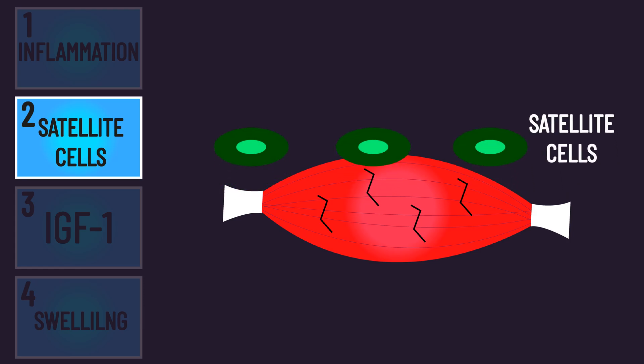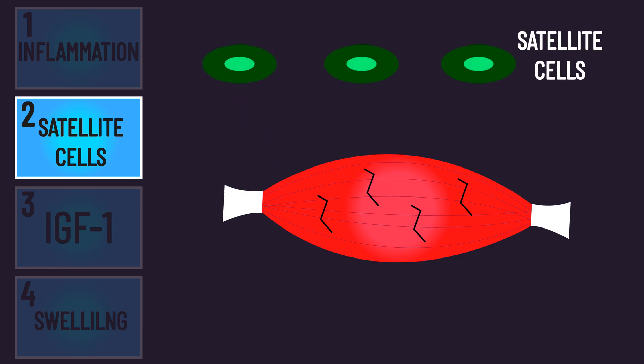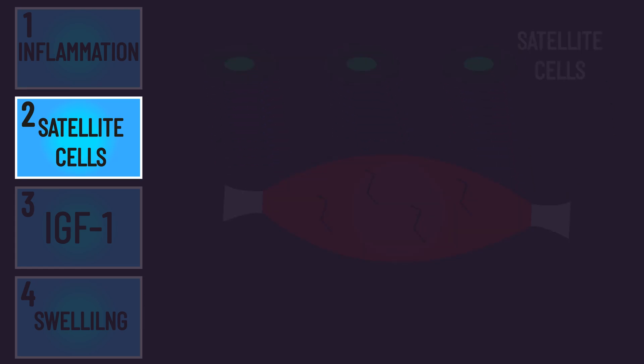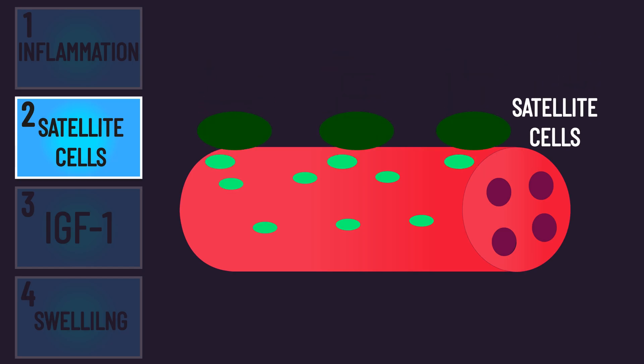Muscle damage appears to cause a significant increase in satellite cell activation, so perhaps damage can ultimately increase the number of myonuclei muscle fibers have, thereby meaning greater muscle fiber growth potential.